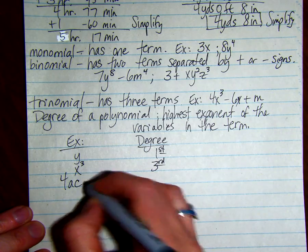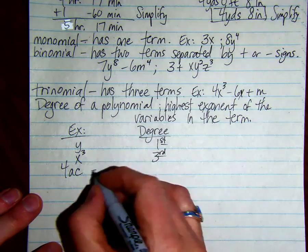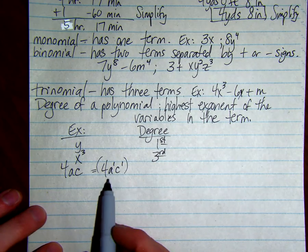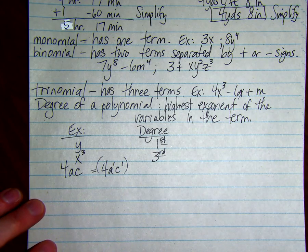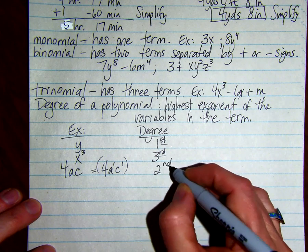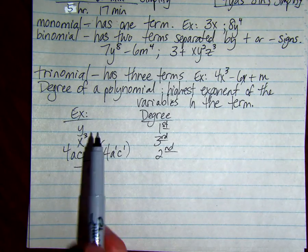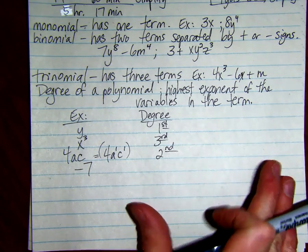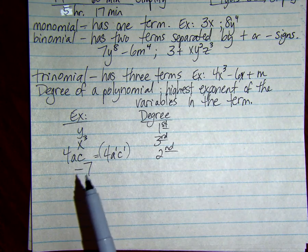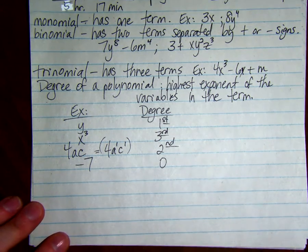4ac - each of these variables has a 1 for an exponent, so you can see what it looks like. You would add the two exponents, so you'd have 2. This one is a second degree. A negative 7 - the degree is the exponent on the variables. Since negative 7 is a constant, it's not a variable. The degree is 0.